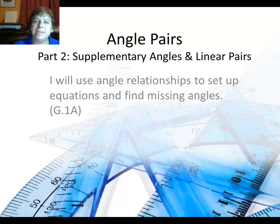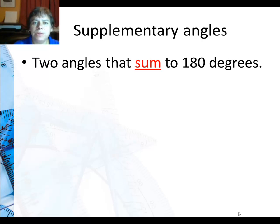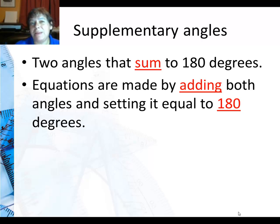In this part of the lesson we're looking at supplementary angles and linear pairs. So what are supplementary angles? They're two angles that sum to 180 degrees. Equations are made by adding both the angles and setting it equal to 180 degrees, basically the angle addition postulate.